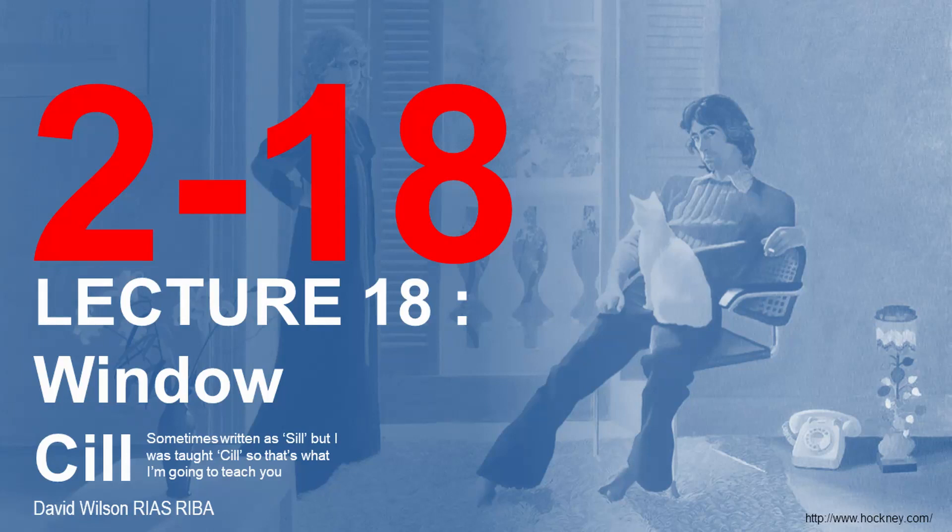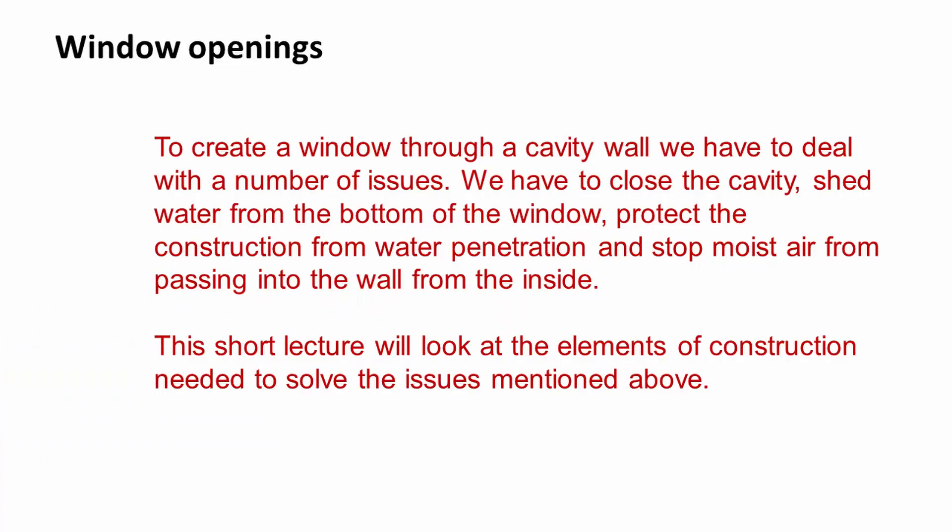Hello and welcome to this the 18th lecture in the series looking at masonry construction. We're going to look at the window sill detail. To create a window through a cavity wall we have to deal with a number of issues: we have to close the cavity, we have to be able to shed water from the bottom of the window and protect the construction from any water penetrating in at the weak spot at the bottom of the window. We also need to stop moist air from passing into the wall from the inside. So this short lecture is going to look step by step at the elements of construction needed to solve these issues.